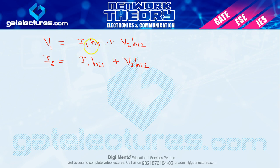Suppose z parameter में आपने left hand side में v1, v2 use किया था, तो remaining i1, i2 रह गए थे — तो आपने i1, i2 and i1, i2 use किया. So अगर आप 2 values left hand side में use कर चुके हैं, तो remaining 2 right hand side में use होंगी — इस तरह से आप दिमाग में रख सकते हैं.